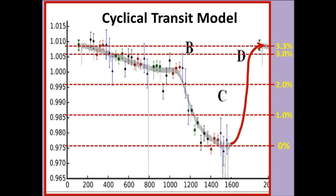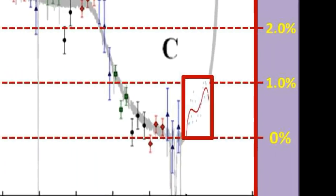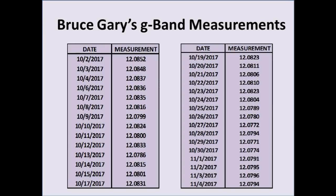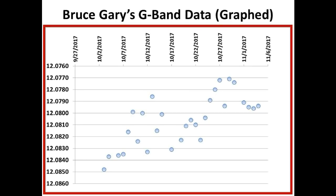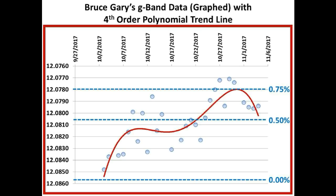If this is truly a repeatable, cyclical process, then the flux of Tabby Star has to go from its low point this summer to a flux level that is 3.3% higher than the lowest point that occurred after the short-term dips. So let's see what's happening so far. We will now take a look at the G-band data that Bruce Gary has taken during the beginning of the recovery phase — measurements taken from October 2nd to November 4th, 2017. Taking the fourth order polynomial trend line of his data, in about a month's time the flux of Tabby Star has brightened about 0.75% and has now backed off a little.